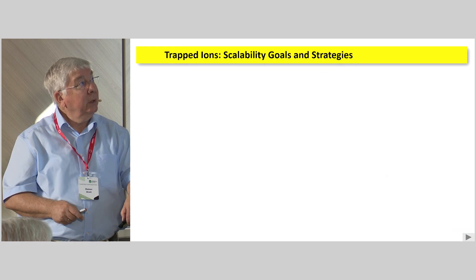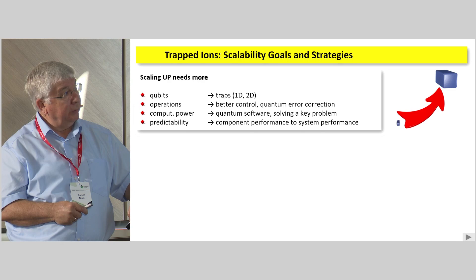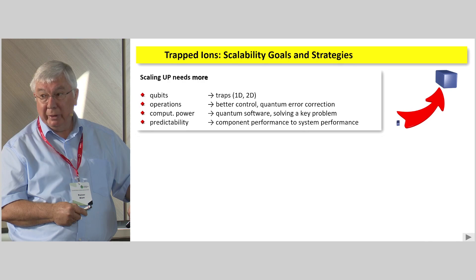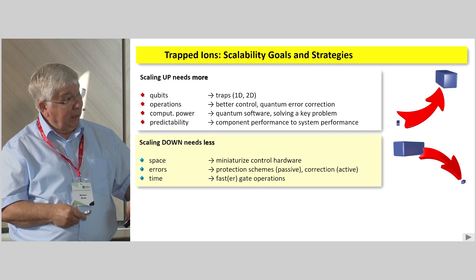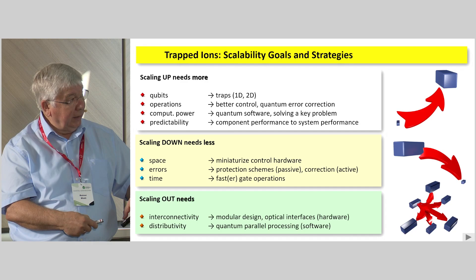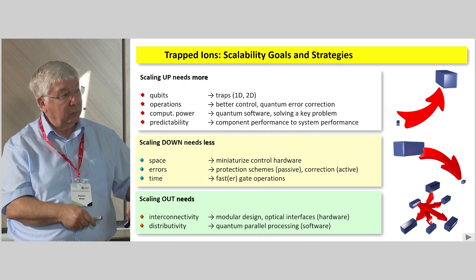With this, I'm nearly at the end. We have, of course, a number of strategies to scale this up. You need more qubits, better traps. You need better control. We are working on all of these systems. What I personally find important is predictability. You need to be able to predict the system performance from component performance, which is not easy to come by and definitely not available, for example, when you work on an IBM computer. Then scaling down means we have to miniaturize everything. You saw already we crammed everything into a 19-inch rack, and we have further to do this. Something that needs to be considered here is the scaling out. The scaling out really means we need interconnectivity, interfaces, and distributivity. Very little has been done here, but we are working on that as well, and we can talk about the question in addition.